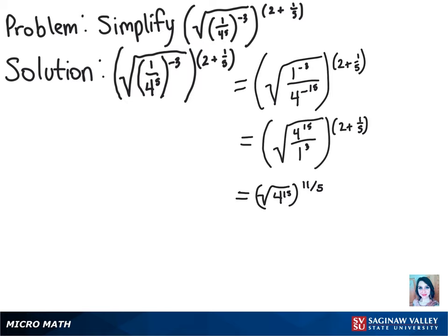So now we want to write the radical as a fraction, which will give us 4 to the 15 halves power, and then that is raised to the 11 over 5th power.